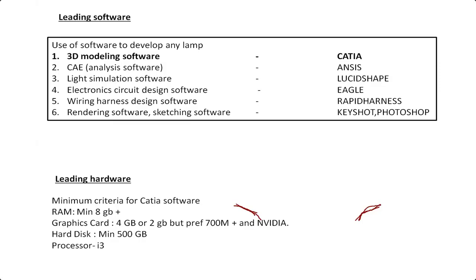Previously, pin-type bulbs like the PY21 and P21 were used. Nowadays, LEDs have been introduced, which means electronics components are required. If electronics are present, circuit design is involved, and the circuit must be simulated to verify that series connections and polarities are working as per our idea. Space constraints are also a major consideration — once the design space is defined, it is shared with the electronics team. Eagle, an Autodesk software, is used to simulate the electronic circuit.